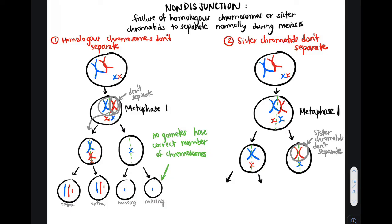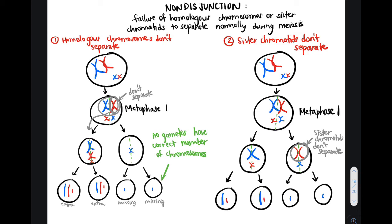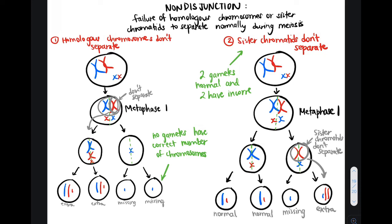This would result in two gametes on the left which should have the correct number of chromosomes, but on the right, an incorrect number of chromosomes. Notice how the two gametes on the left are normal, but on the right, one gamete is missing chromosomes and one has extra chromosomes. This tells us that if sister chromatids don't separate, then two gametes are going to have the normal number of chromosomes, and two are going to have the incorrect number of chromosomes. These are two examples of non-disjunction.